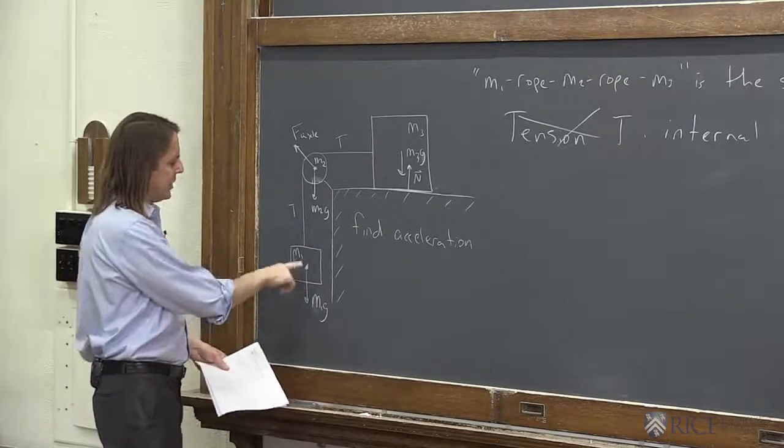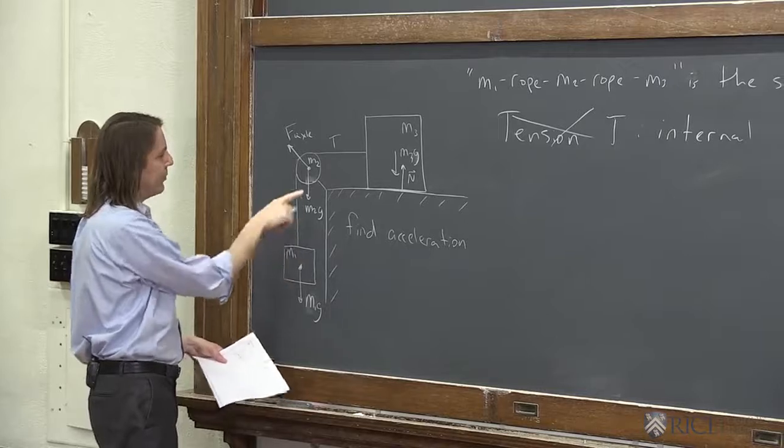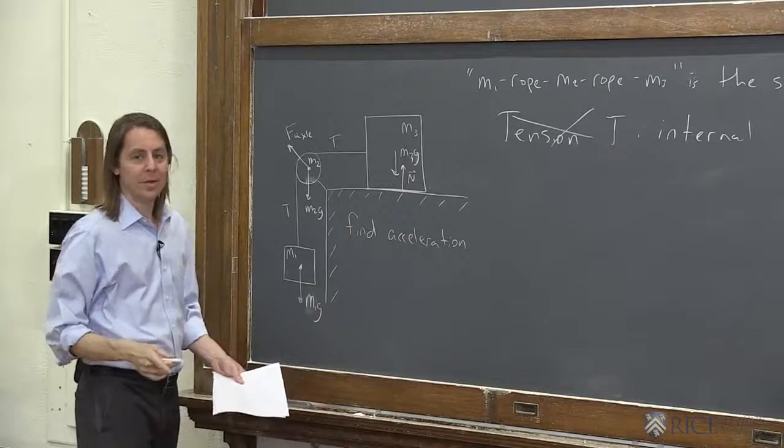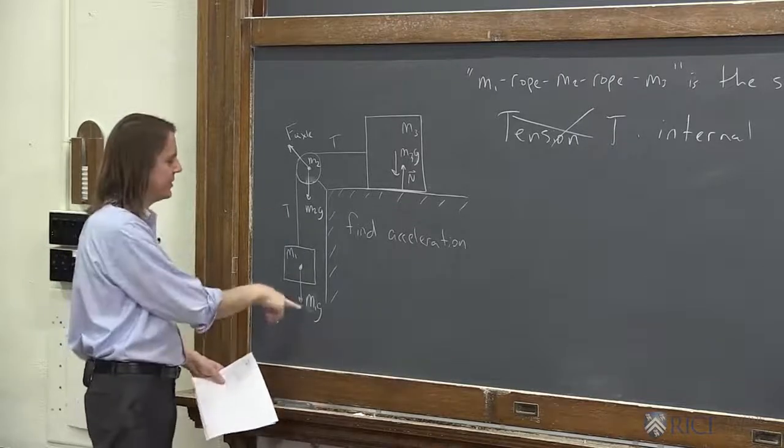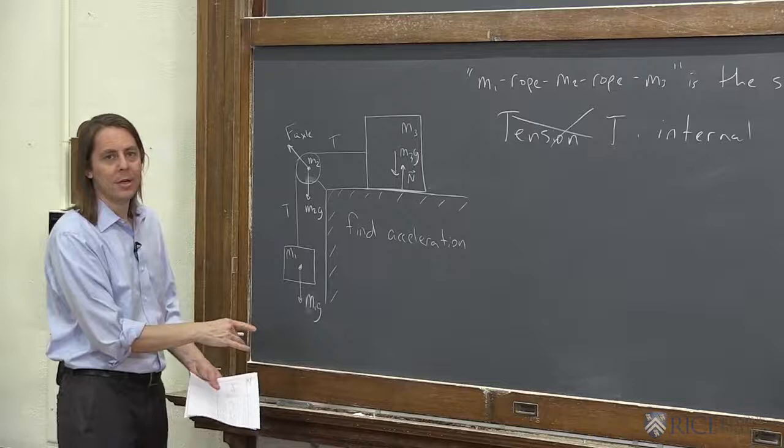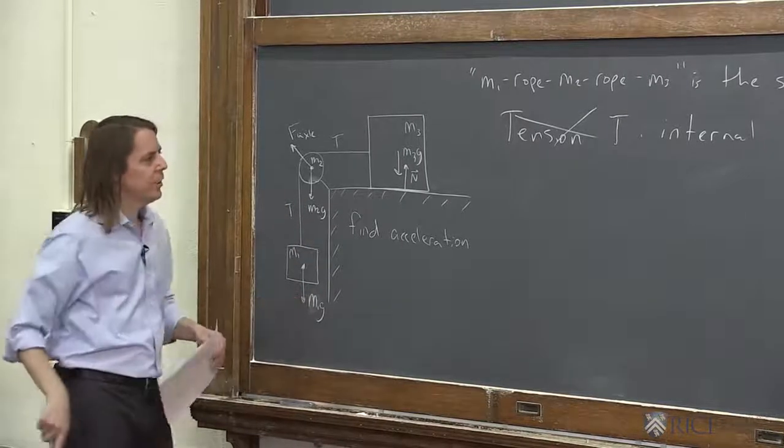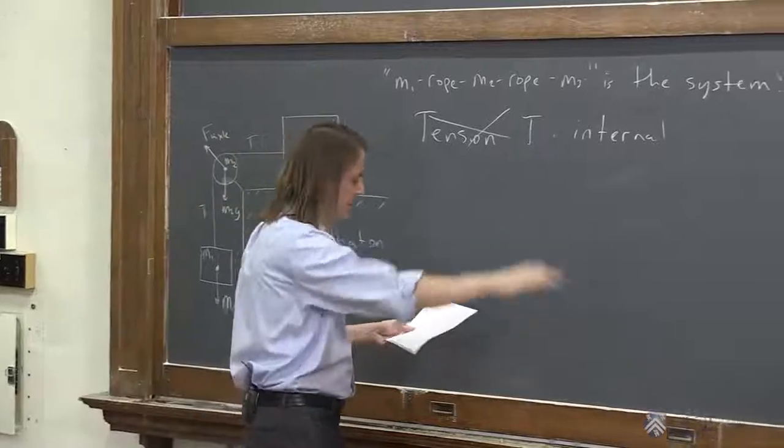And you could say, well, we could have just said mg. But then also, remember, this thing is accelerating. So we actually don't know the tension automatically. We can get it later. But right now, you can't just say the tension is equal to m1g because the thing is falling. So the only way is directly from the force m1g. Tension is internal. We don't need it.